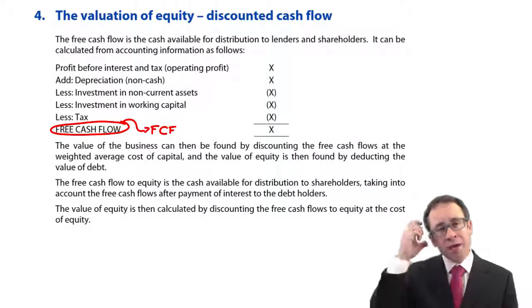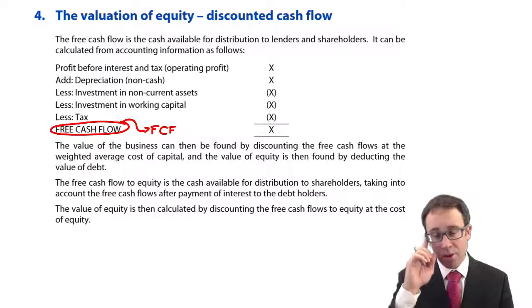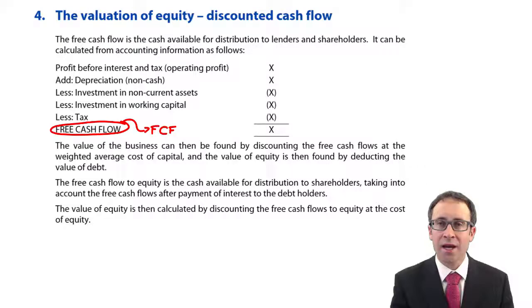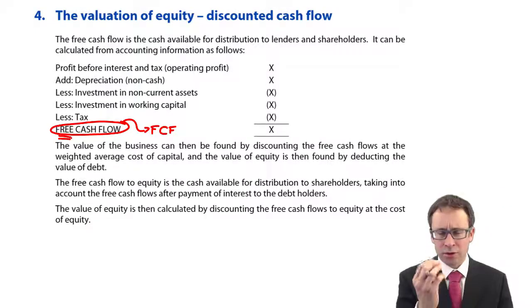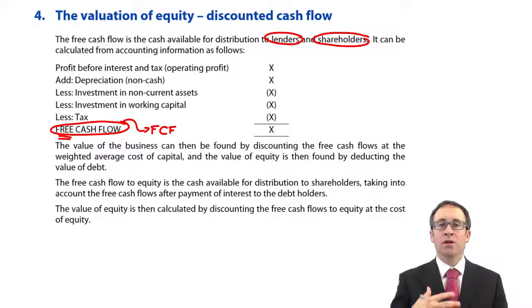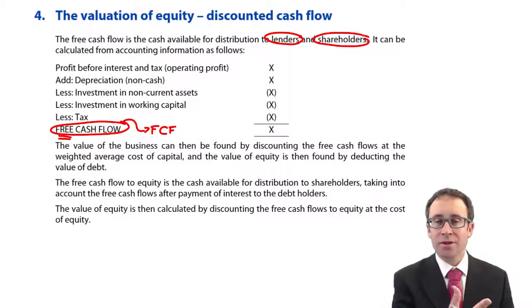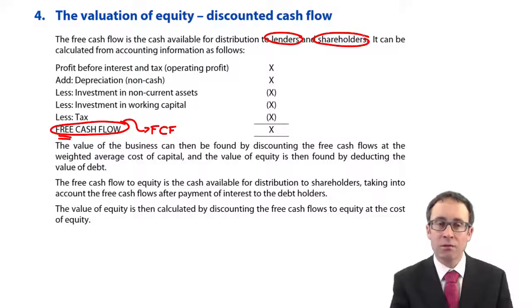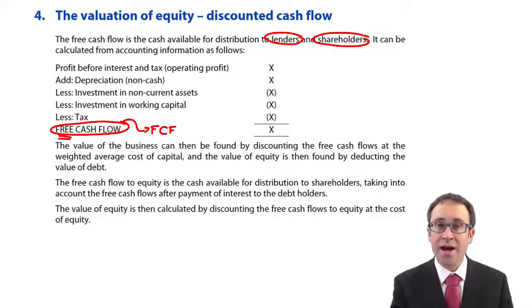We've heard about cash flow before — in statements of cash flows, net present value techniques, IRR techniques, payback techniques — but what do we specifically mean by free cash flow? Free cash flow effectively is the cash flow that the business generates that is then available to the providers of finance. Technically, it's the cash flow available to pay interest to debt holders — those who have lent us money — and also what is left to pay dividends to shareholders. So free cash flow is the cash flow available to both the lenders and the shareholders of the business.